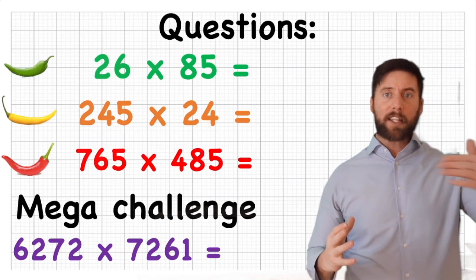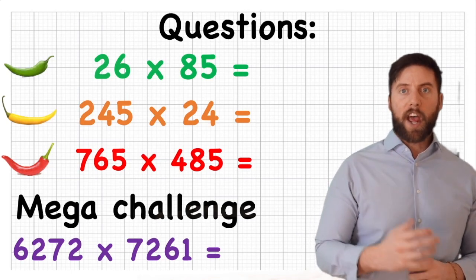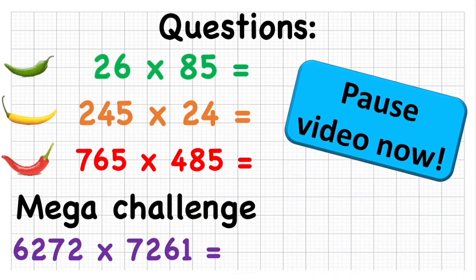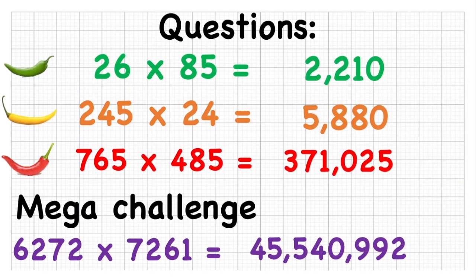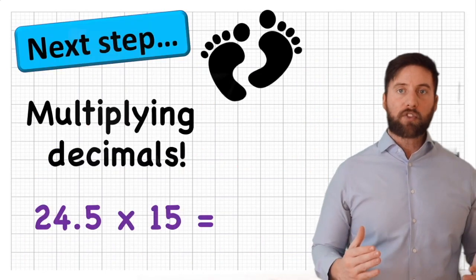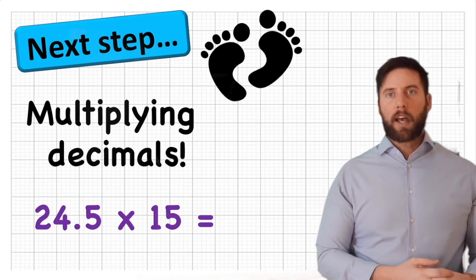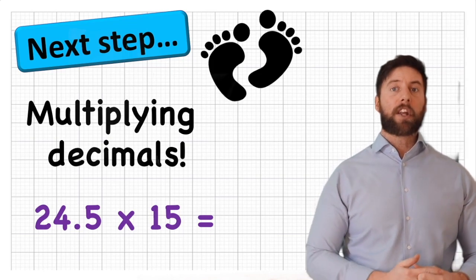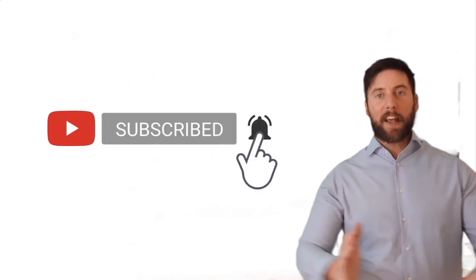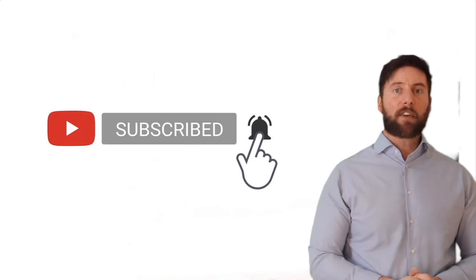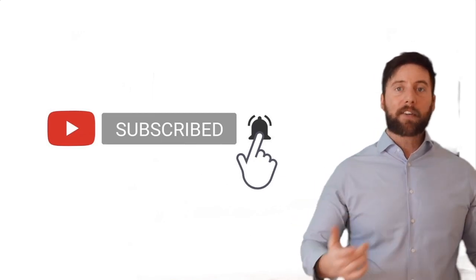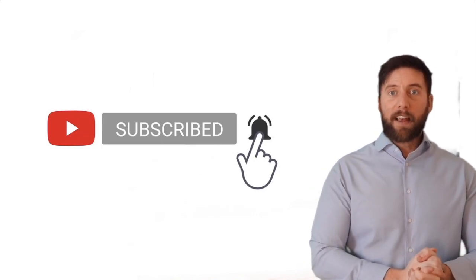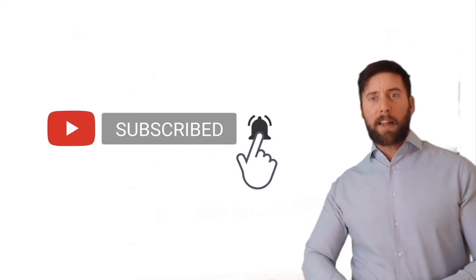I'm going to put four questions on the board — a green, an orange, and a red challenge. If you get all four right, you are ready for our next step, which is multiplying decimals — that's our next progression in understanding multiplication. Well done, thanks very much. Make sure to check out the rest of our videos on the channel for all your mathematical needs, and give us a subscribe if you've liked this video — there's going to be plenty more like this. Thanks very much, guys.